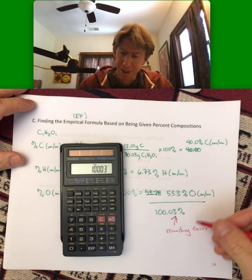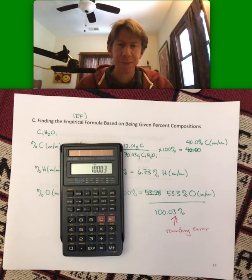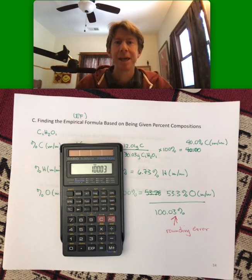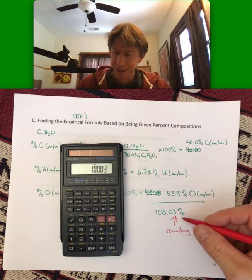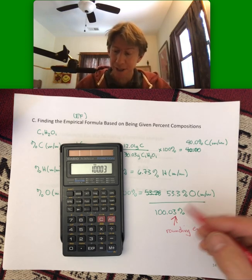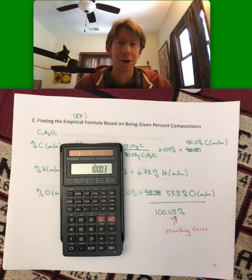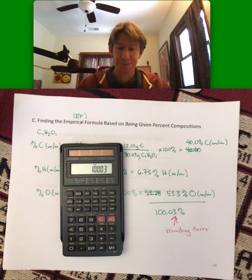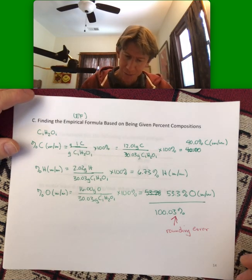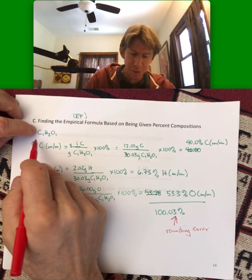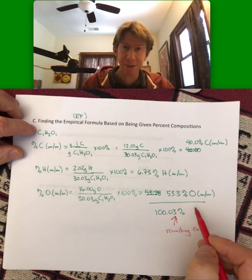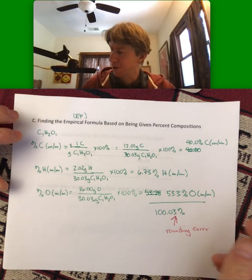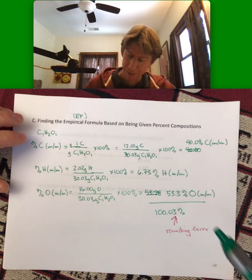So I do get 100.03%, and that 0.03% is known as a rounding error, because it has to add up to 100% when you add up all the parts of something. And any differences are because we didn't keep all the digits in our calculator, which is fine. At times when you work these types of problems, you will get numbers that are slightly off. They should be about this close though, so 0.03 to the correct answer. Now, if we have an empirical formula, we have now shown how we convert it into percent compositions.